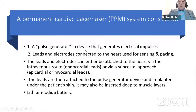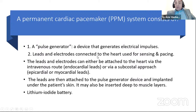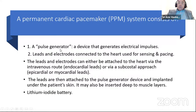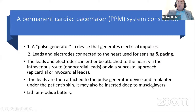A permanent cardiac pacemaker consists of a pulse generator — a device generating electrical impulses — and leads and electrodes connected to the heart for sensing and pacing. Leads can be endocardial (via intravenous route) or epicardial/myocardial (via subcostal approach), with the generator placed in the chest wall or abdominal wall. Leads are attached to the pulse generator and implanted under the patient's skin, sometimes deep to muscle layers, powered by a lithium iodide battery.